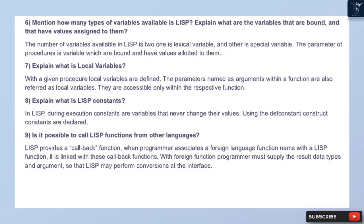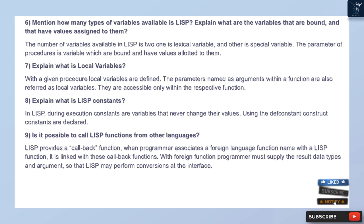Question 6: Mention how many types of variables are available in Lisp, and explain what variables are bound and have values assigned to them. The number of variables available in Lisp is 2: one is the lexical variable, and the other is the special variable.